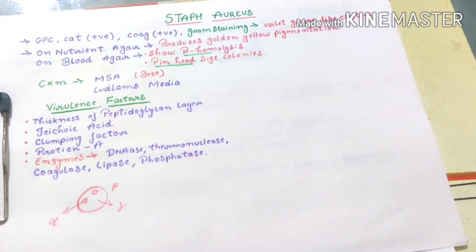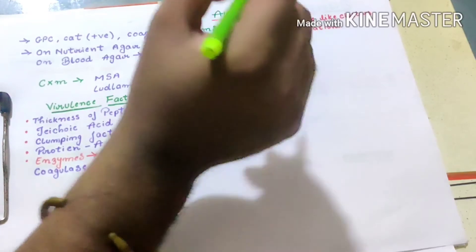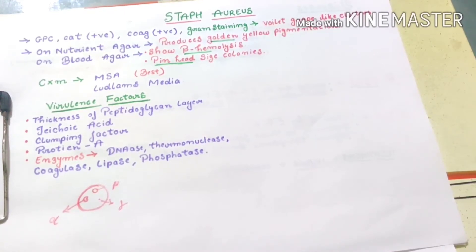In culture medium it shows pinhead size colonies. After gram staining, violet grape-like structure, on nutrient agar golden yellow pigmentation, and on blood agar complete hemolysis, that means beta hemolysis.